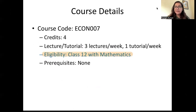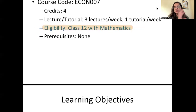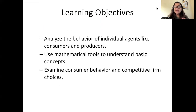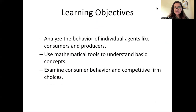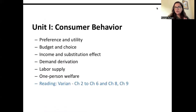This course is going to be a little technical and will require some mathematical pace. Students should have Class 12 with maths as eligibility. There will be a bit of maths here and there. The main objective is to understand in depth how a consumer is thinking and how a producer is thinking — we will model that mathematically. This course is divided into three units.